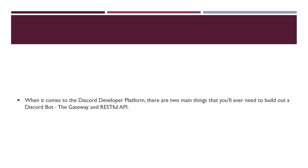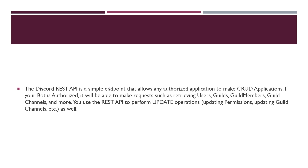When it comes to the Discord developer platform, there are two main things you'll ever need to worry about to build out your Discord bot: the Gateway and the RESTful API. The Discord REST API is a simple endpoint that allows any authorized application to make CRUD operations — getting all guilds, getting all members, updating permissions, and more. If your bot is authorized, it can make requests such as retrieving users, guilds, guild members, guild channels, and more. You typically use the REST API to perform these CRUD operations.